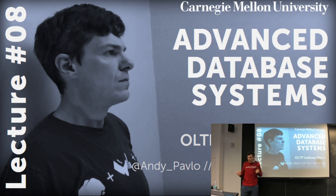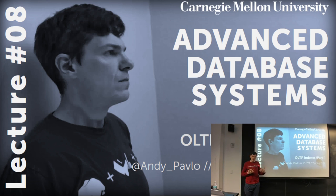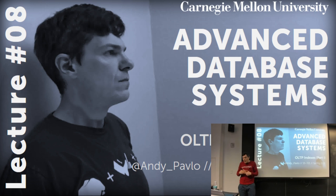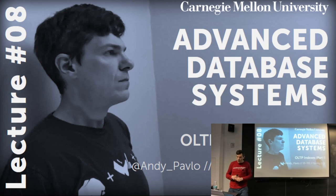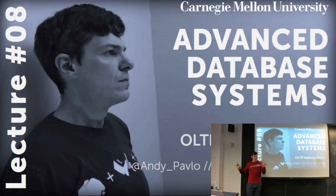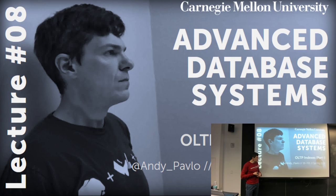This is the first of the two-part lecture on OLTP indexes. Last class covered latching and locking inside indexes — locking for higher-level logical things like locking individual keys, and latching for protecting the internal data structure's critical sections. Today's class is all about how to build indexes that don't use any latches at all. We'll still need the higher-level locking for phantoms, but the focus is building data structures without any latches.